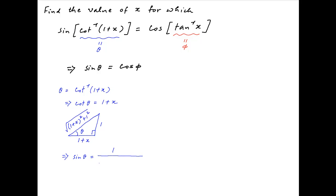Therefore, sin theta in this triangle, which is equal to the perpendicular upon the hypotenuse, is equal to 1 upon square root of (1 plus x) whole square plus 1, which simplifies to 1 upon square root of x squared plus 2x plus 2.